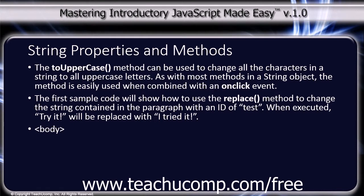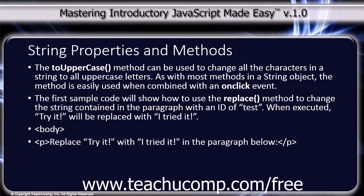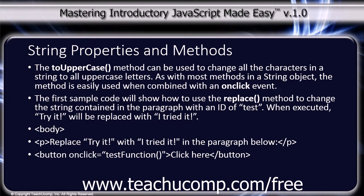Start with the body tag. Paragraph tag: 'Replace try it with I tried it in the paragraph below.' Close paragraph tag. Button tag with on-click equals 'testFunction()'. The button label 'click here' and the close button tag. Paragraph tag with an ID of test: 'Try it' and the close paragraph tag.